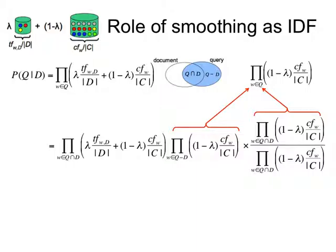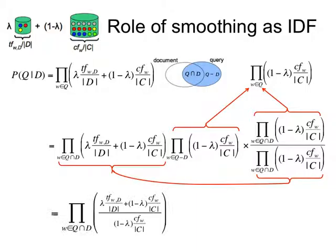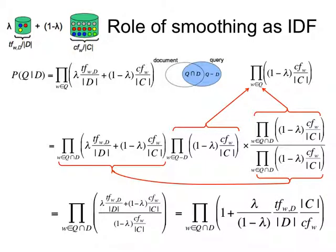And this part, that is a product over the same terms that I had there. So I'm going to move it under the same product. And what I get is the ratio where at the top I have a smoothed estimate, the maximum likelihood plus the smoothing component. And at the bottom, I just have the smoothing component. And then a little bit of algebra can turn it into something like that. So that part is the same as that part.